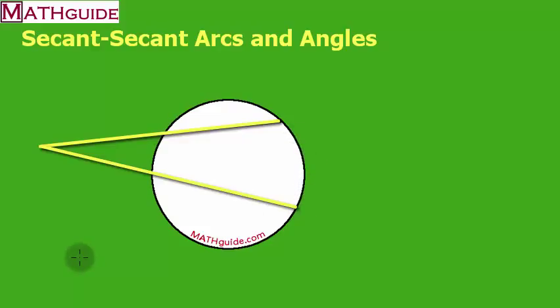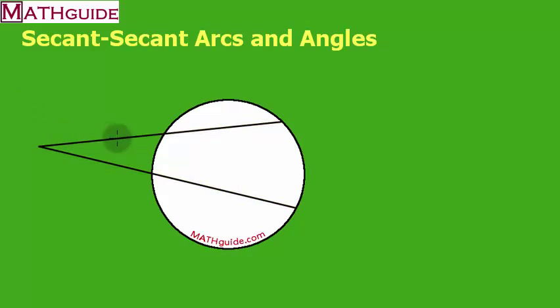It turns out that there's a nice little relationship. Let's imagine we know what this arc measure is. I'm going to call it arc measure one, or just A1. And let's say that this arc measure from this point to that point where those two secant lines meet the circle, that arc measure is arc 2, or just A2.